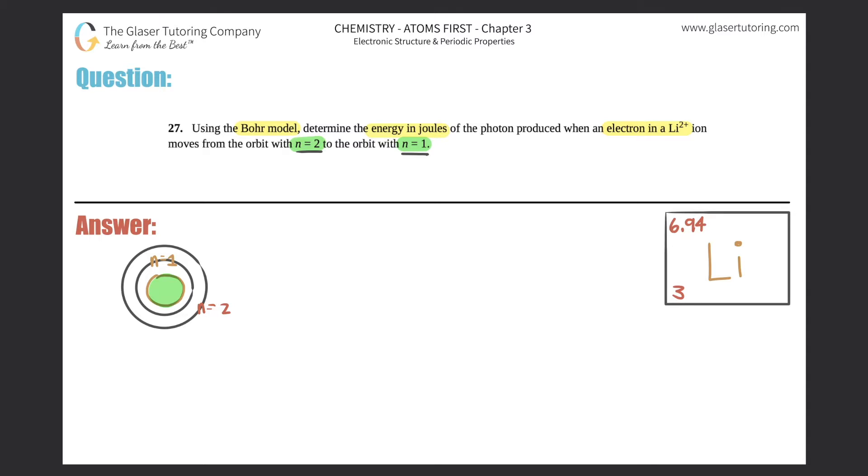So it's telling us that the electron is moving from n equals 2 to n equals 1. We just have to find the energy of that jump.